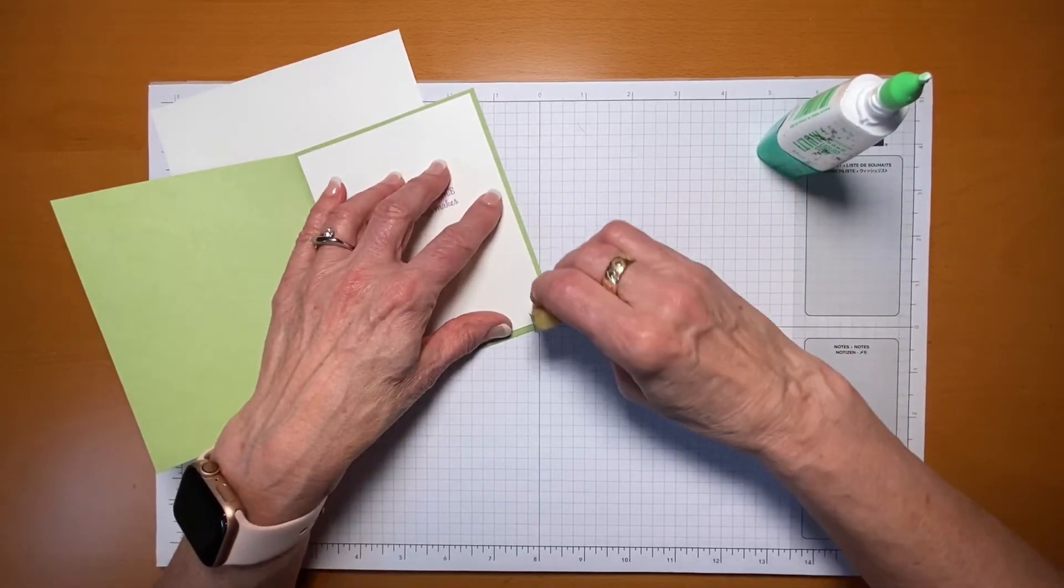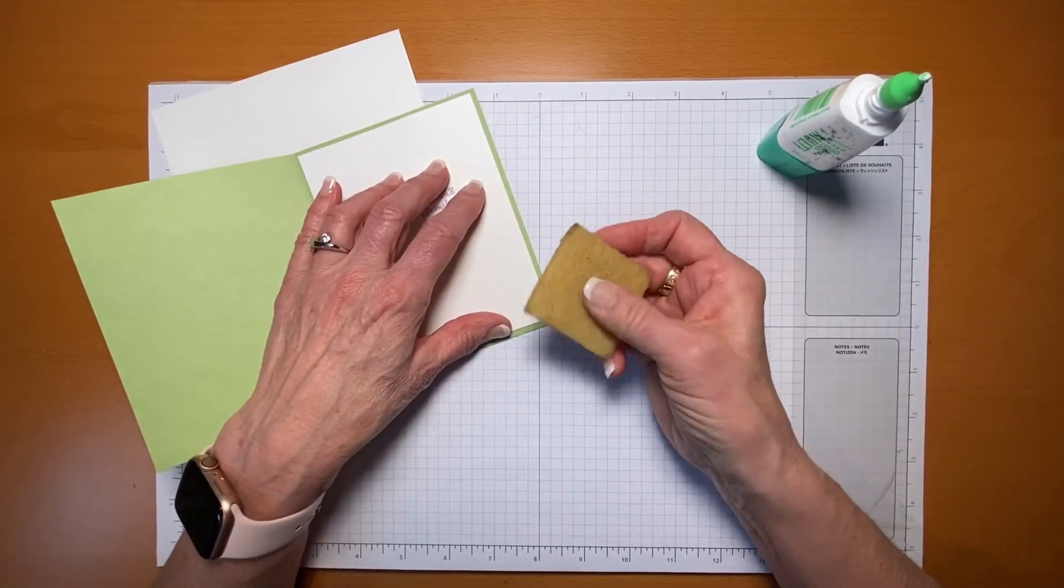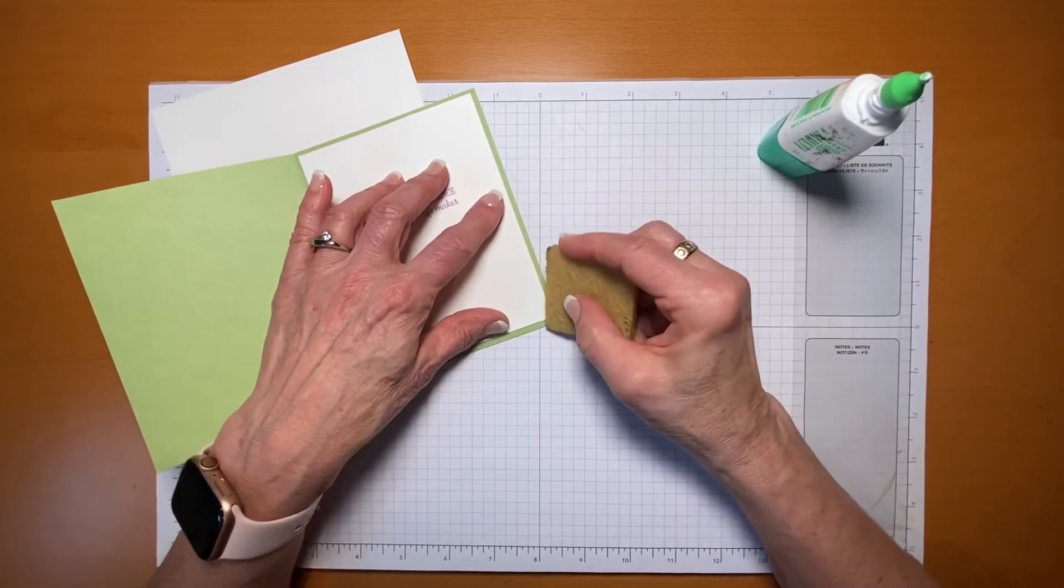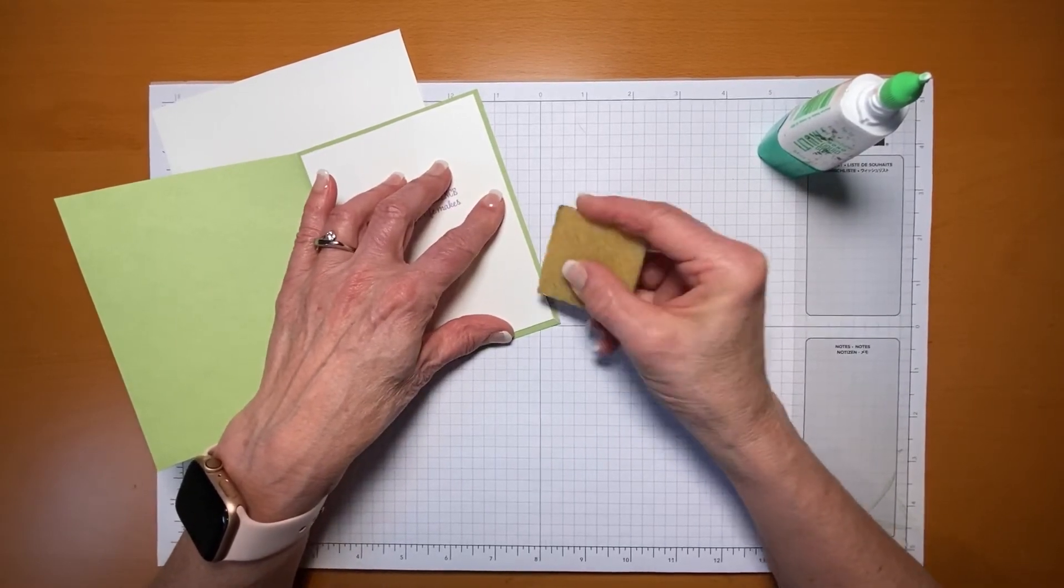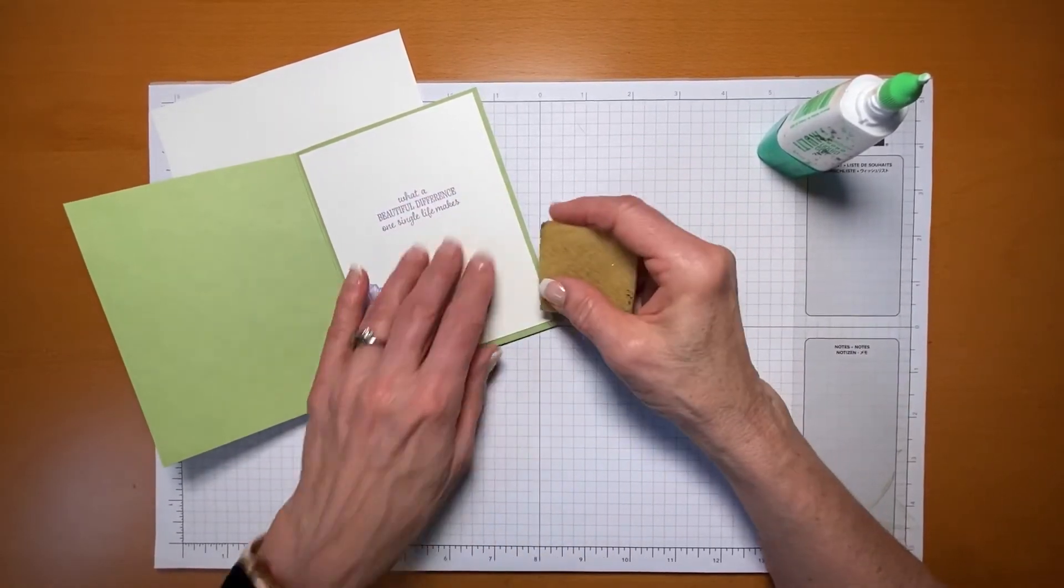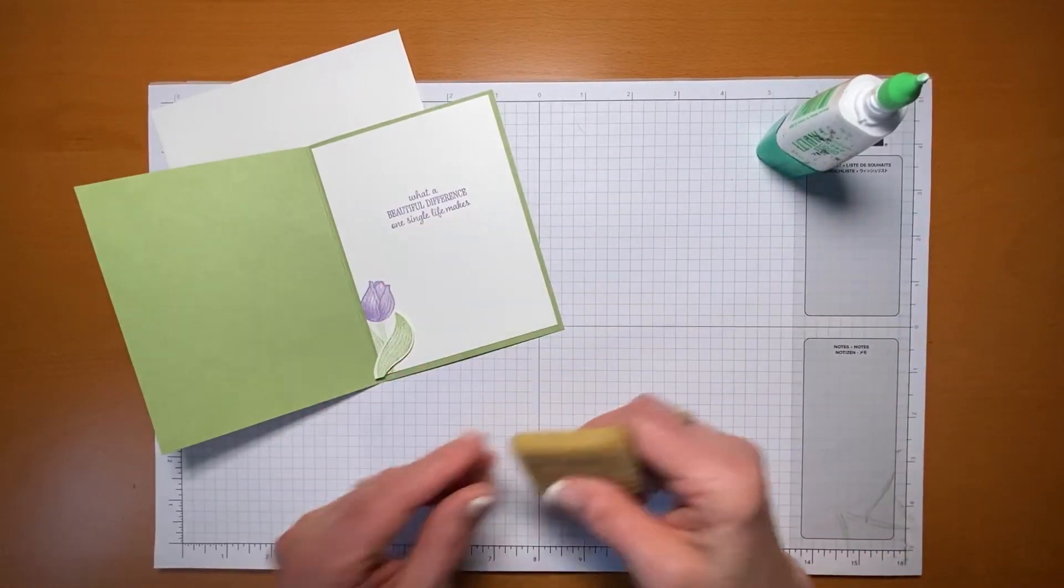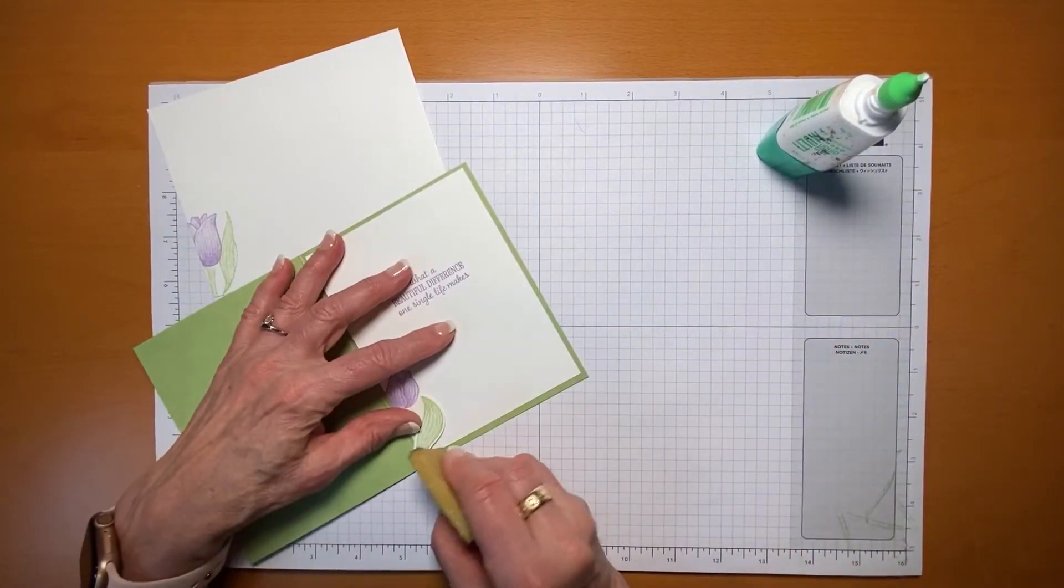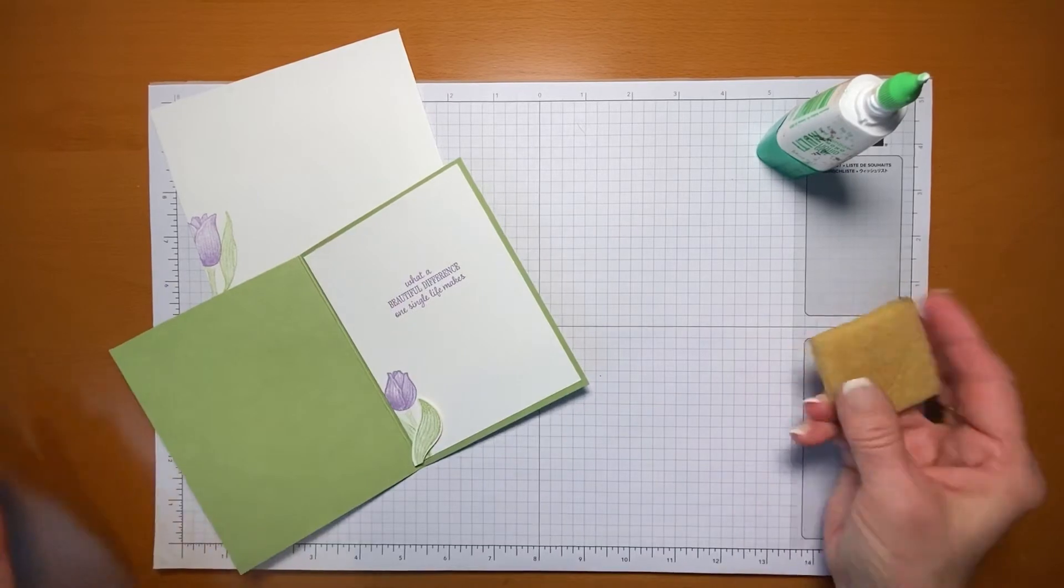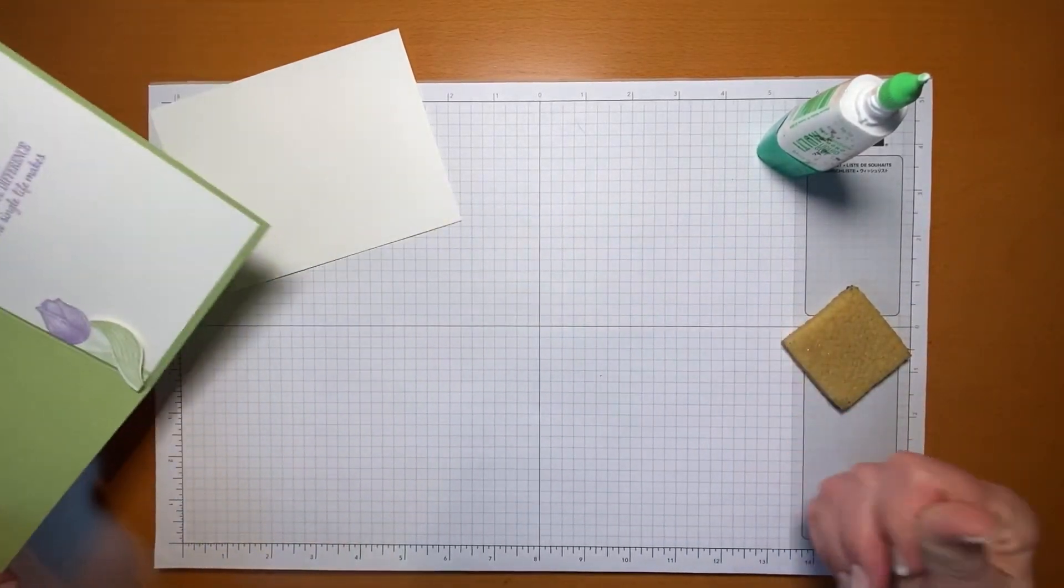I want to wipe it away and I'm using this little glue eraser that is perfect for that. All I do is rub it on the glue that I want to remove and it is gone, you would never know.